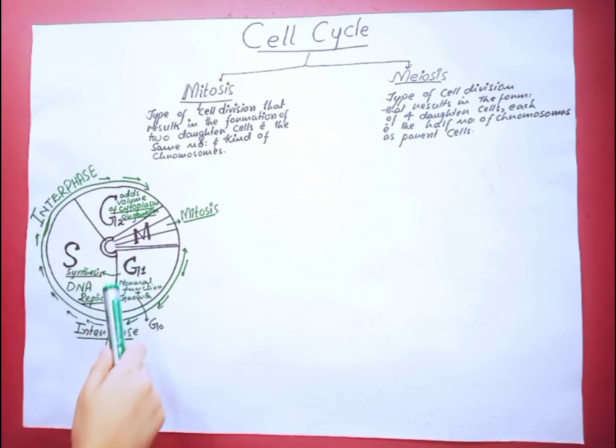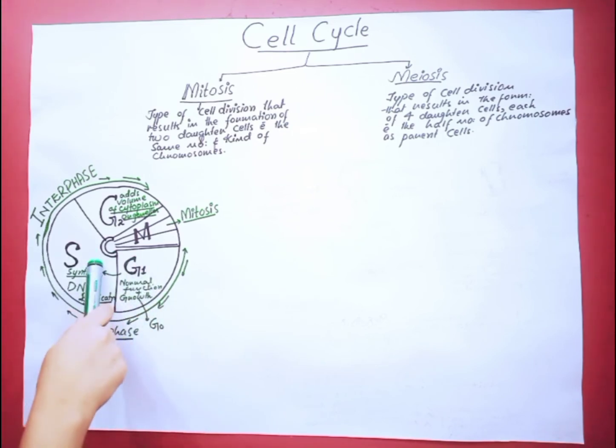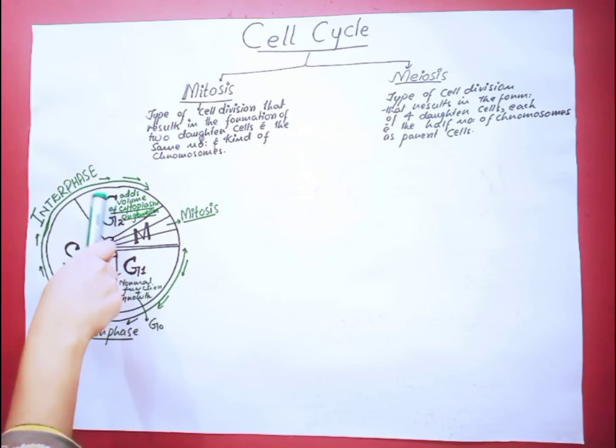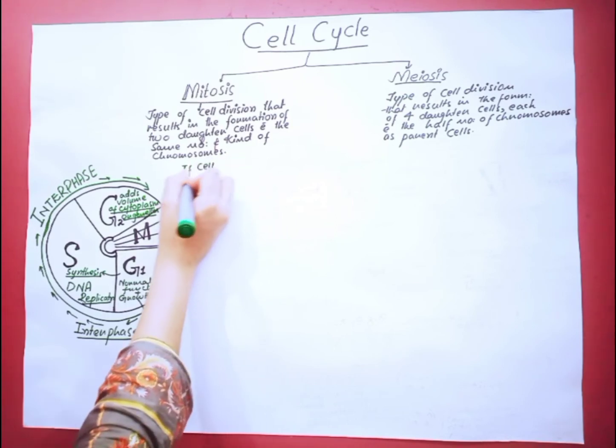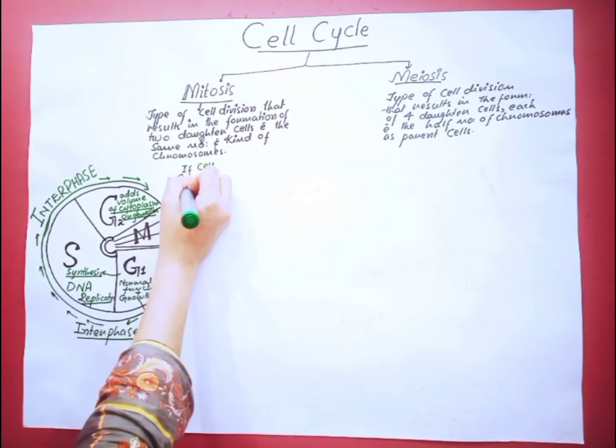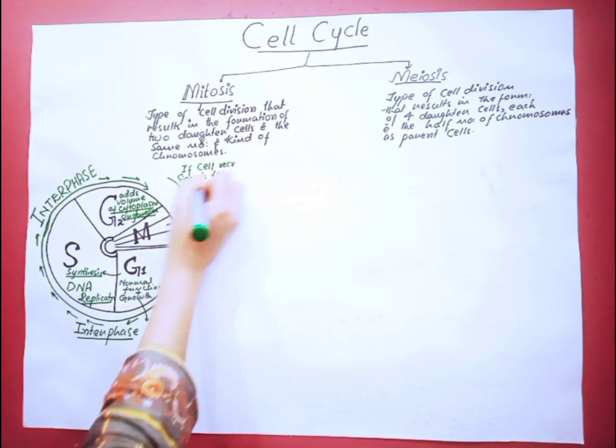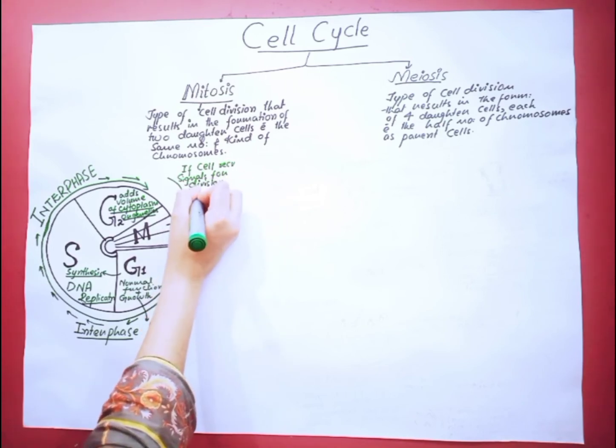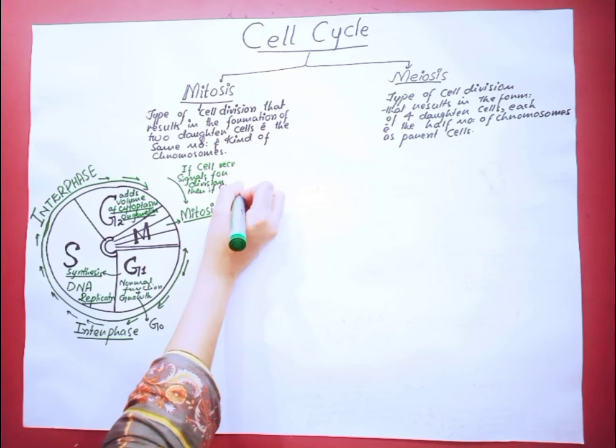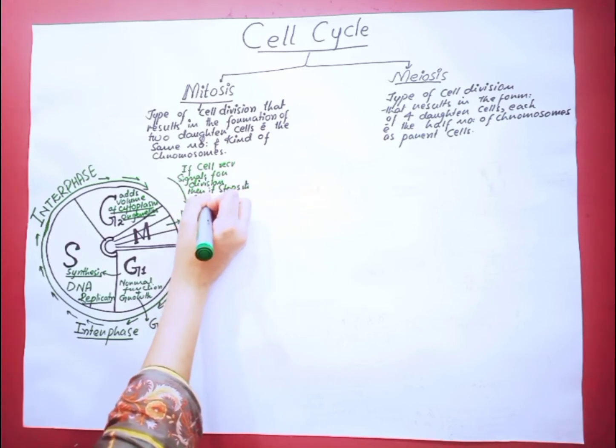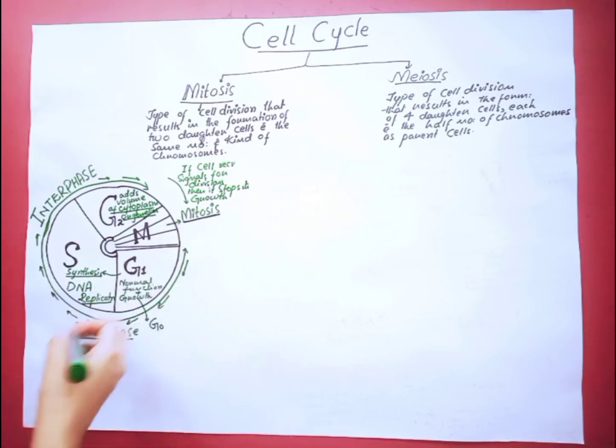In interphase, the cell performs their normal functions. It grows in size, performs its metabolic functions, replicates its DNA, adds up the volume of cytoplasm, and replicates many other cell organelles. So this interphase is the phase in which cells perform their daily routine functions. If cell receives signals for division, then it stops its growth and enters into the mitosis phase, M phase.